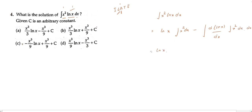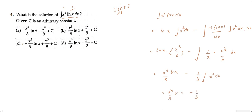Integration of x² gives x³/3. So we have: ln(x) × x³/3 − ∫(1/x × x³/3) dx. Simplifying: x³/3 · ln(x) − (1/3)∫x² dx. Integrating x² again gives x³/3. So the result is x³/3 · ln(x) − (1/3)(x³/3) + c. Don't forget to add +c, as it is mandatory in indefinite integration.